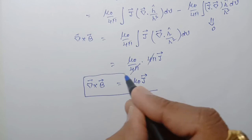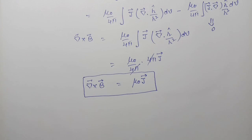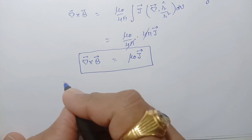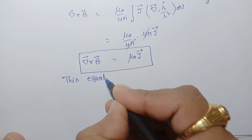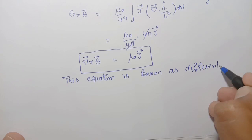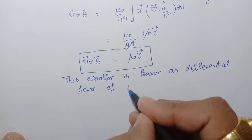So in this lecture we discussed first the steady current, then the Biot-Savart law for line current, for surface current, and for volume current, and then the divergence and curl of the magnetic field. The divergence of the magnetic field equals zero, and the curl of the magnetic field equals μ₀J (vector). This equation is also known as the differential form of Ampere's law. Thank you.